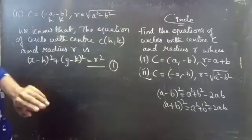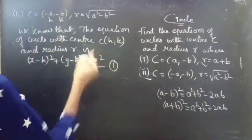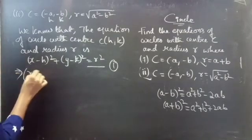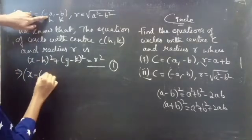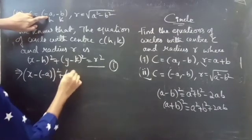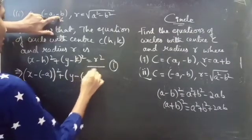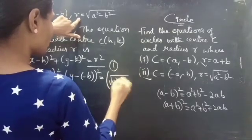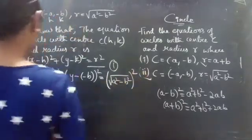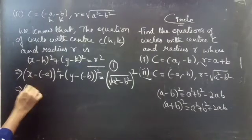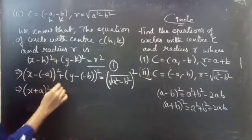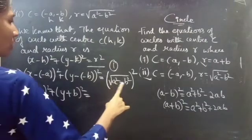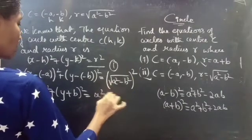Since we have the values of the center, h equals minus a and k equals minus b, and radius equals square root of a squared minus b squared, by substituting these values we get x minus (minus a) whole squared plus y minus (minus b) whole squared equals square root of a squared minus b squared whole squared.